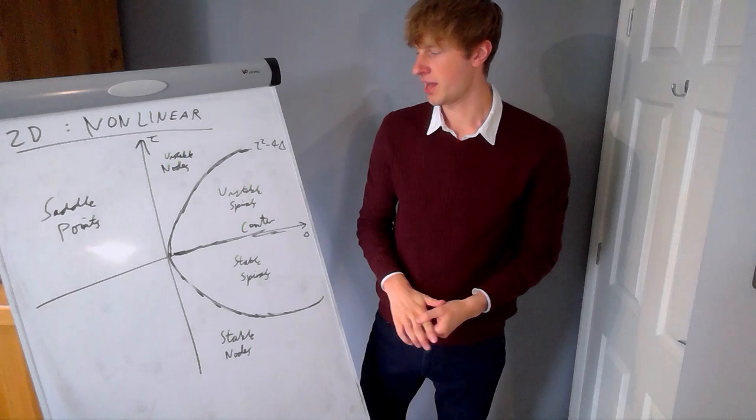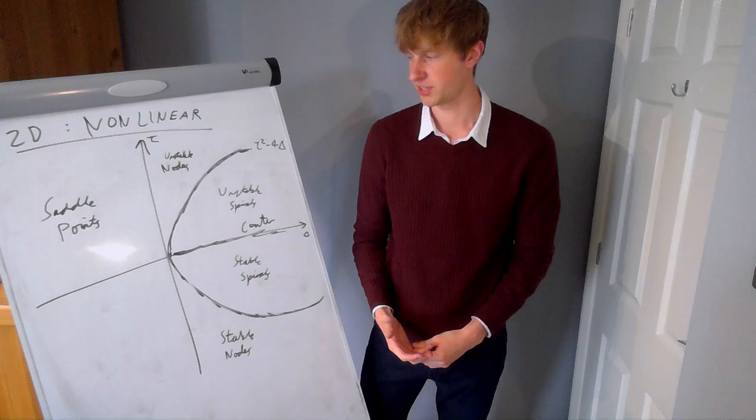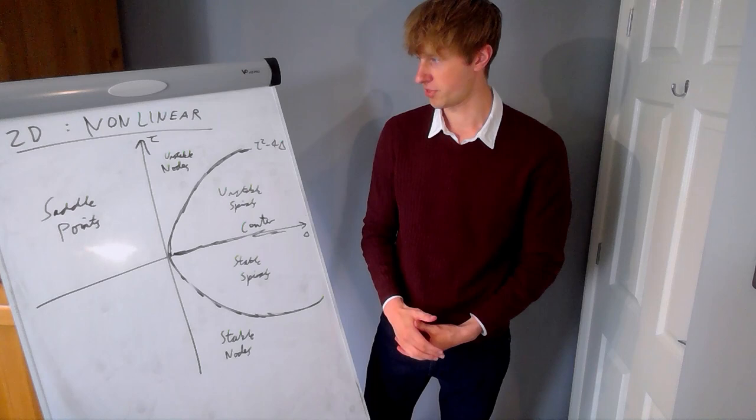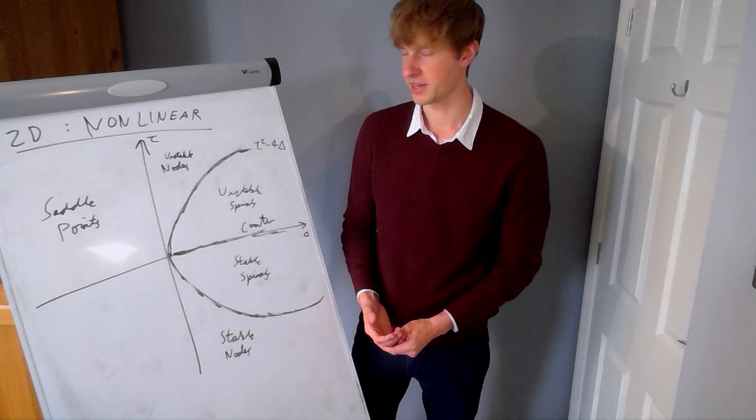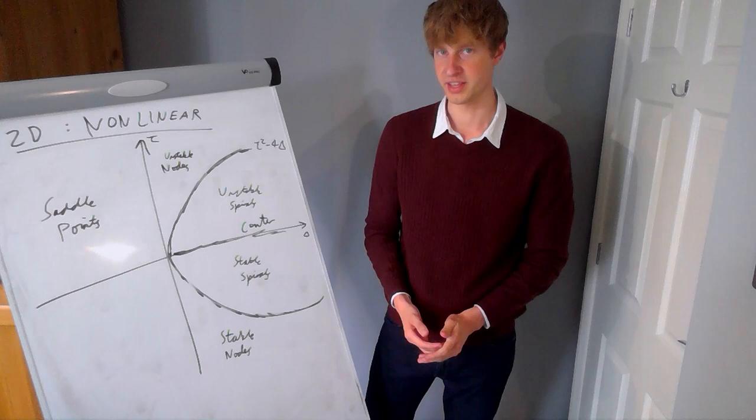That's my overview of the stability of fixed points in two dimensions. The next thing we're going to study is what bifurcations look like in two dimensions, which we'll cover in the next video. This may not make complete sense the first time if you've never seen it before, so you might want to watch a couple more videos on this topic. I'll see you next time for bifurcations in two dimensions.